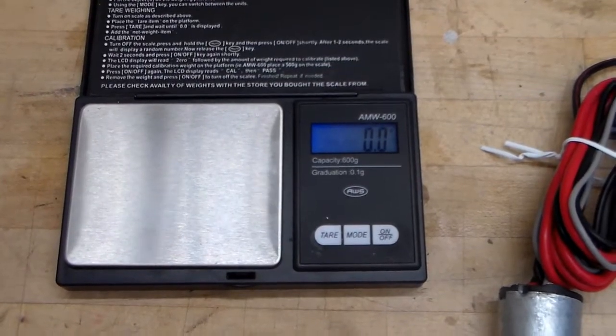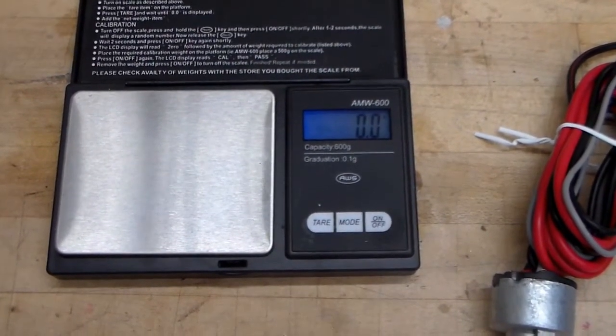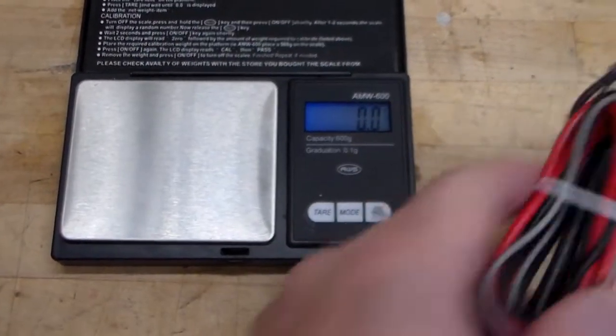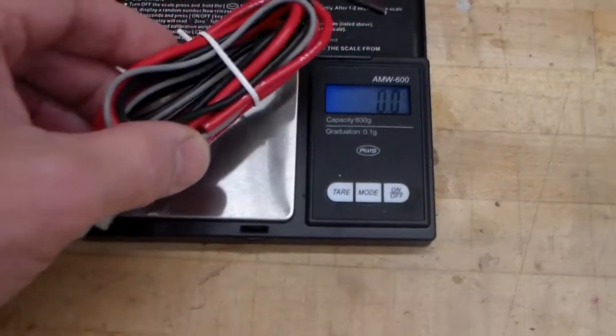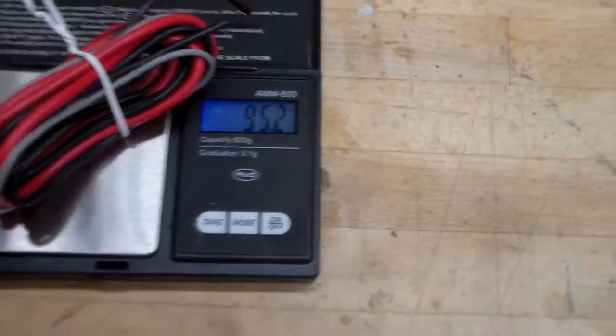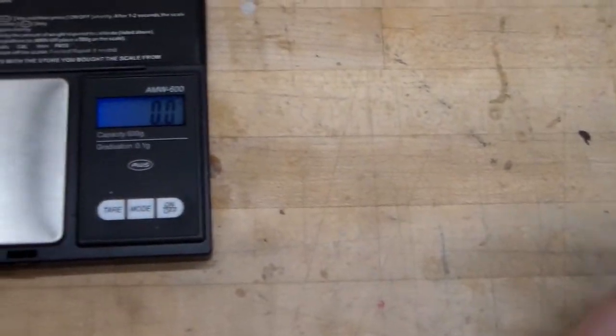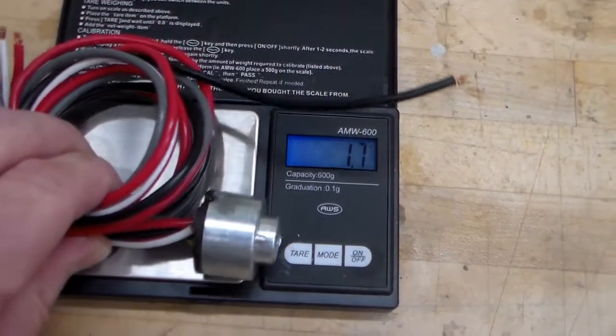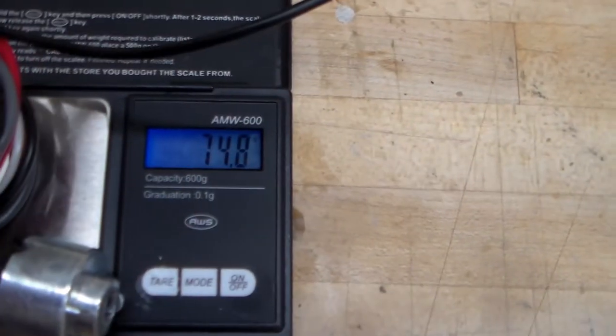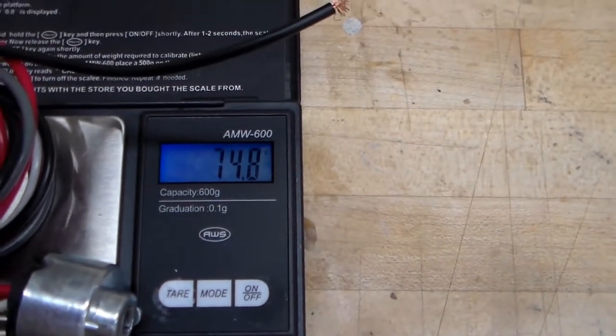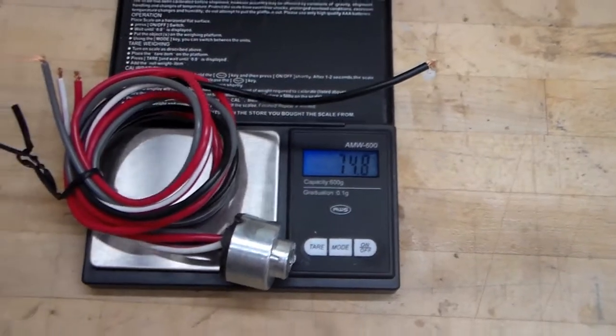First thing I noticed with these two switches is that one weighs more than the other one does. So this is our switch from Taiwan. It comes in at 95.2 grams. Switch from Germany comes in at 74.8 grams.